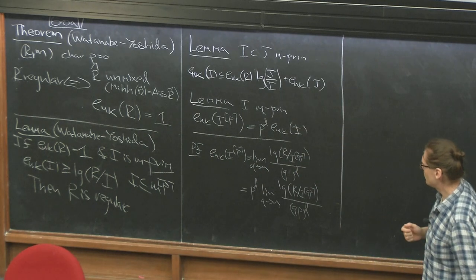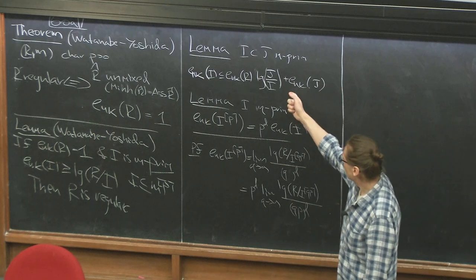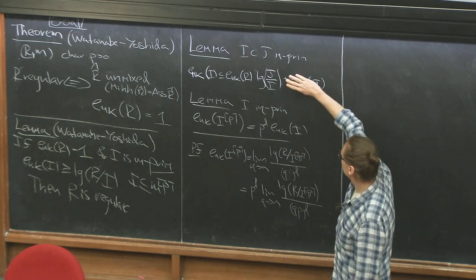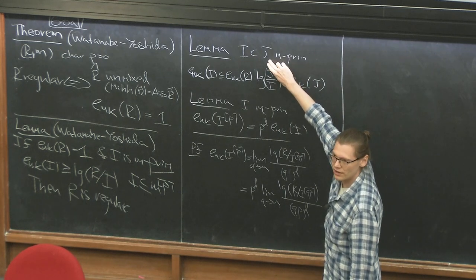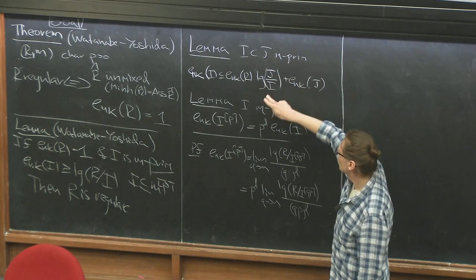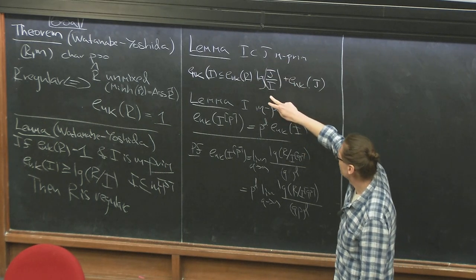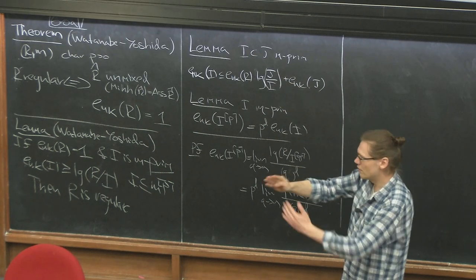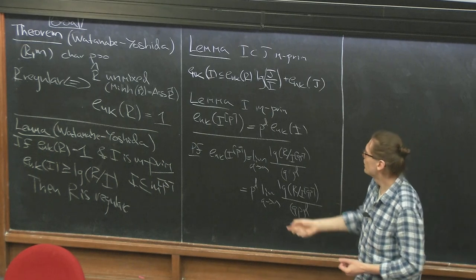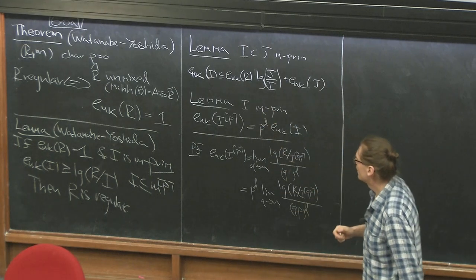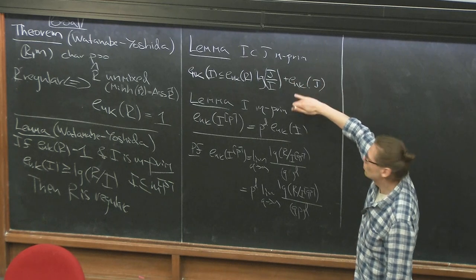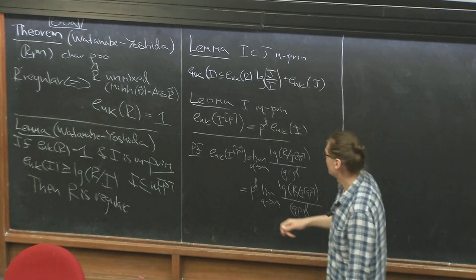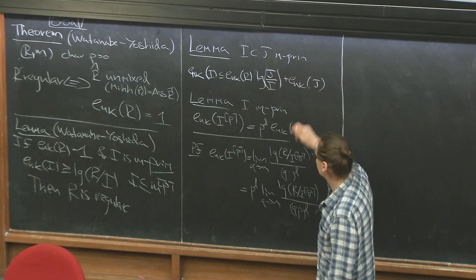To prove the lemma I need two simple ingredients. The first is a slight version of a result discussed last time. Last time we proved this for j equals r by a filtration result. Here we take the length of j mod i, take the composition series, apply Frobenius, and count — giving the inequality. Last time j equaled r, so there was no Hilbert-Kunz multiplicity of j, but here we filter not all the way to r but to j.